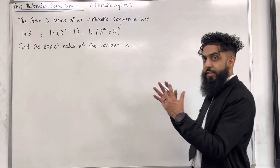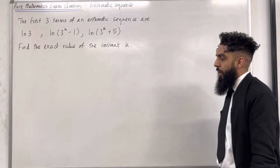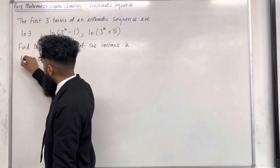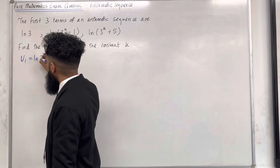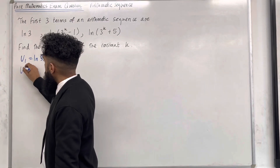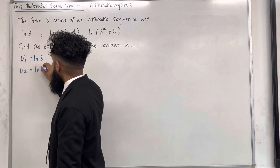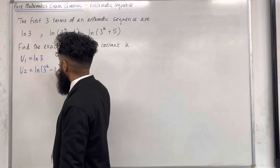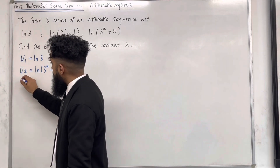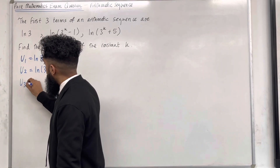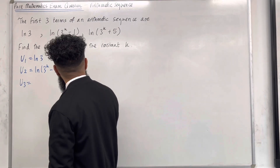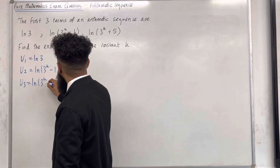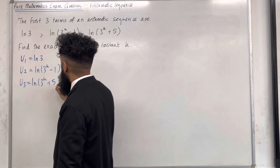I'm going to start by labelling the terms in this sequence. So u1, the first term, is equal to ln3. u2, the second term, is equal to ln(3 to the power k minus 1). And u3, the third term, is equal to ln(3 to the power k plus 5).